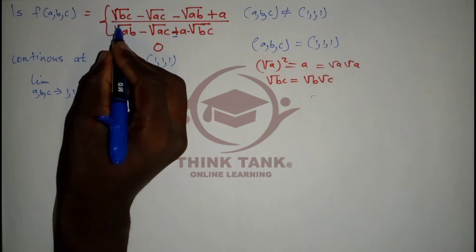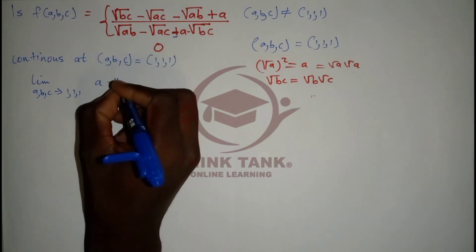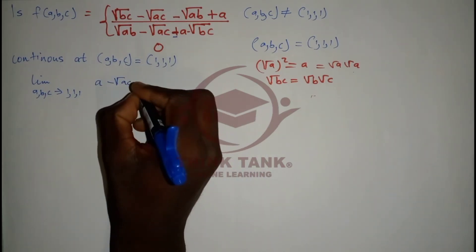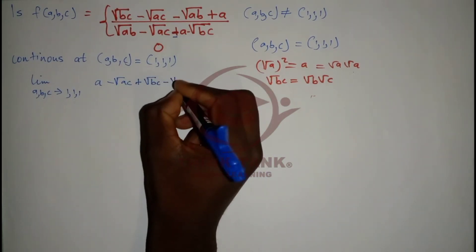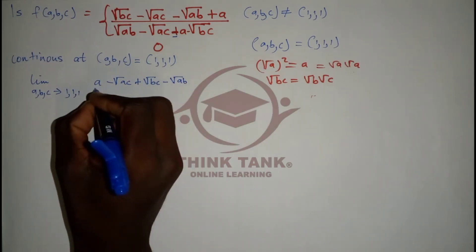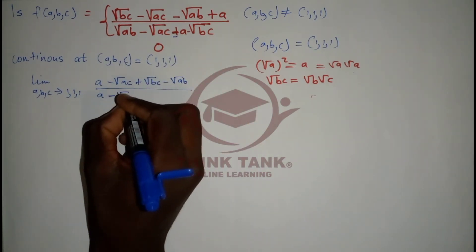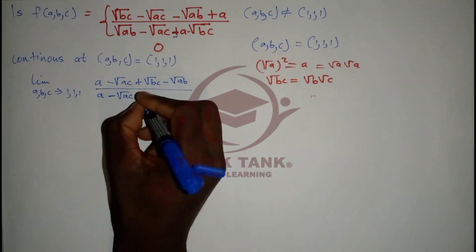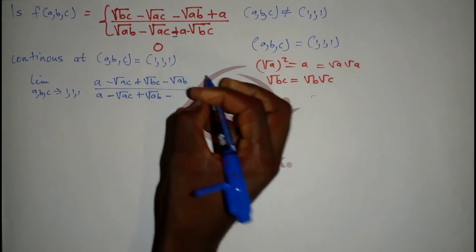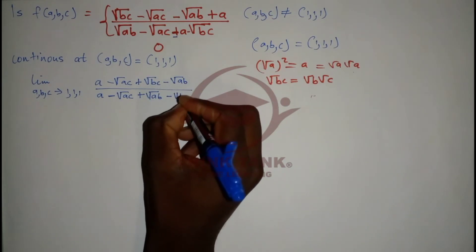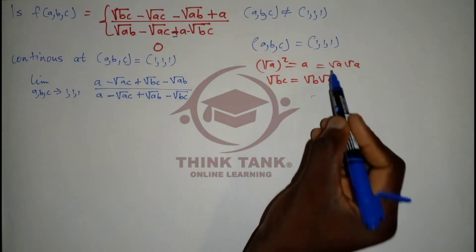I'm going to group the numerator: let me start by writing [a minus root(ac)] plus [root(bc) minus root(ab)], divided by a denominator. For the denominator, I'll write [a minus root(ac)] plus [root(ab) minus root(bc)]. We said that a equals root(a) times root(a), so I'll use that to factorize.